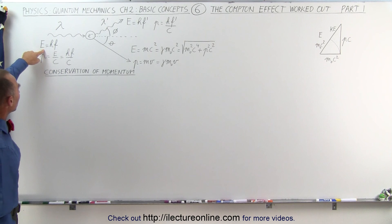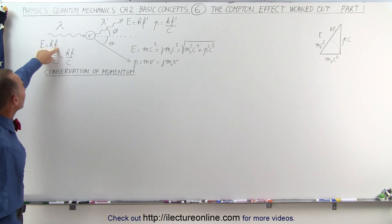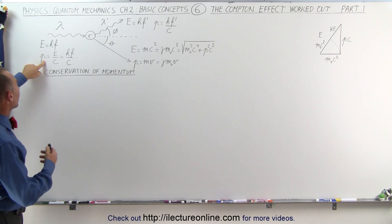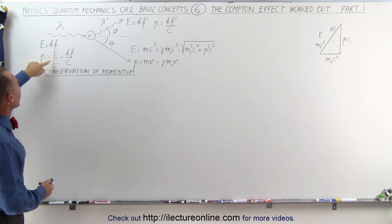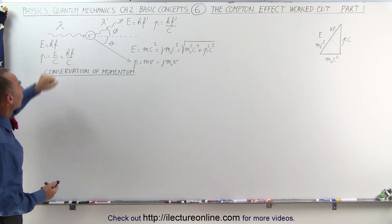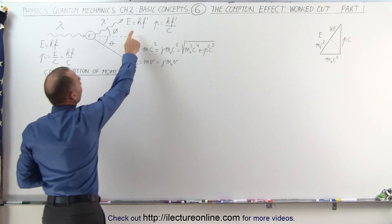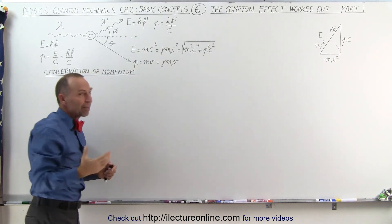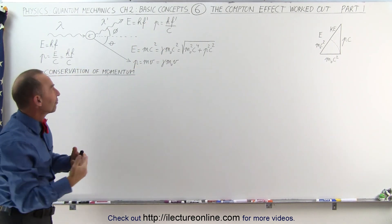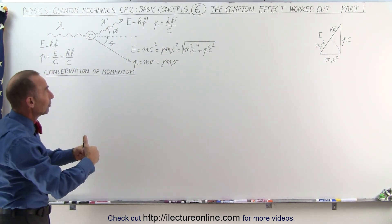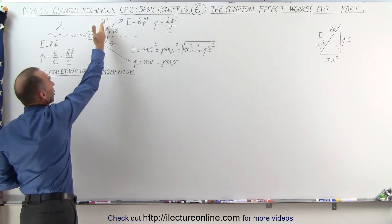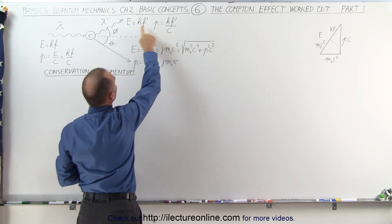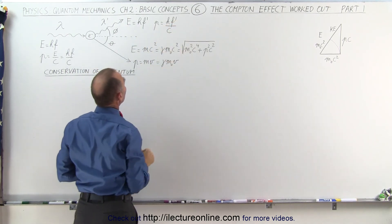If the photon has a wavelength lambda before the collision, it will have a longer wavelength after, because part of the energy of the photon will have been given to the electron. The photon has energy h times the frequency, where h is Planck's constant. The momentum of the photon is the energy divided by c, therefore hf over c. The energy after the collision for the photon will be h times f prime — a different, lower frequency, giving a longer wavelength — and the momentum after is hf prime over c.